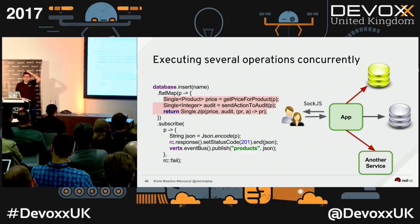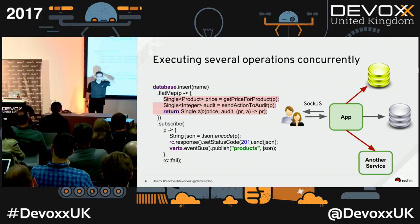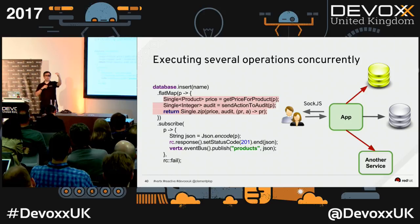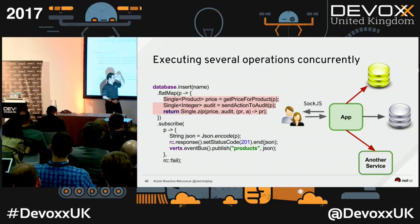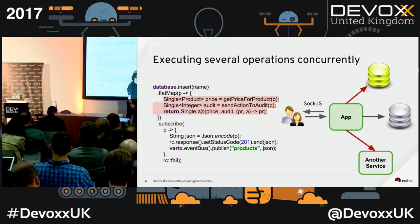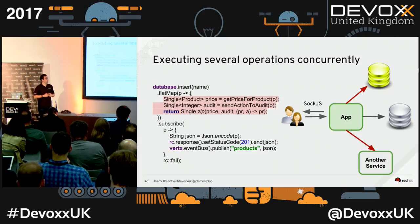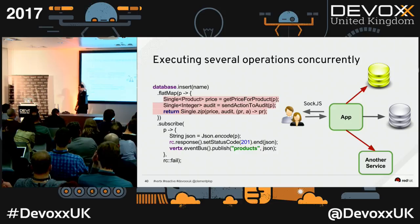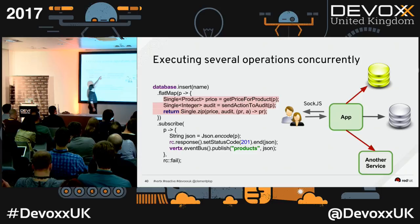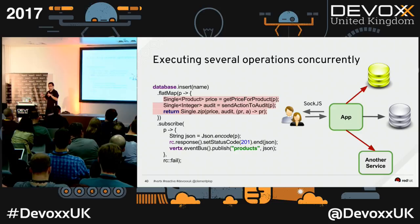Let's try calling two services at the same time. Both are asynchronous — how do I know when both are done? Get price for product returns a Single, and I do another action with my auditing system. I want to continue when both are done. I just say Single.zip, pass my two singles, and have a callback that returns the product. This callback is only called when all the singles have been completed successfully. Both calls happen at the same time — easy parallel composition.